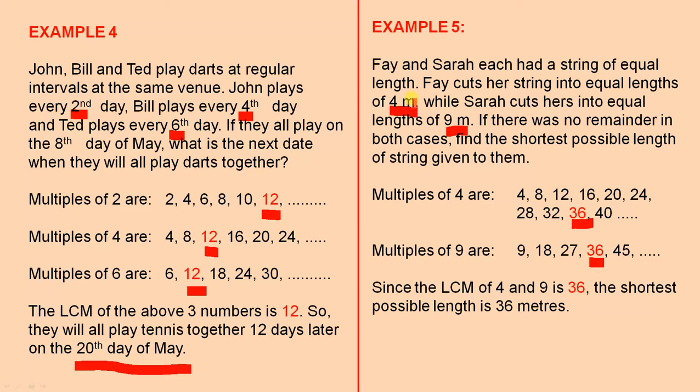So, when Faye cuts hers into four metre lengths, she's going to have nine metres, sorry, nine lengths, she will have nine separate lengths, and each of those lengths will be four metres. She'll have nine of them.